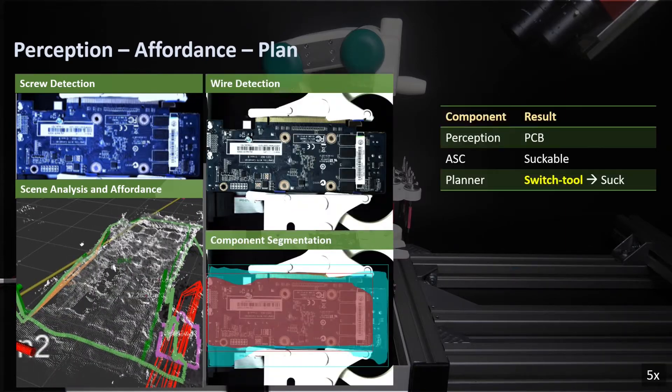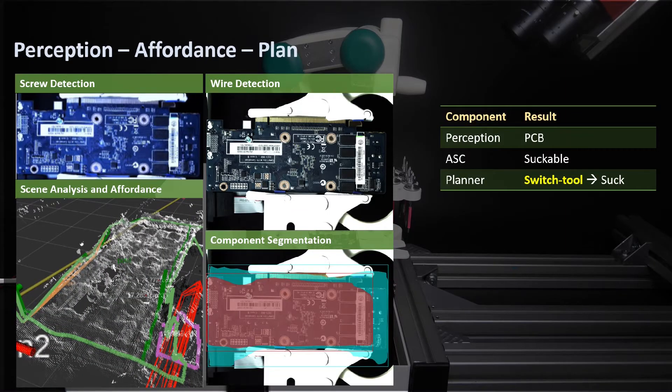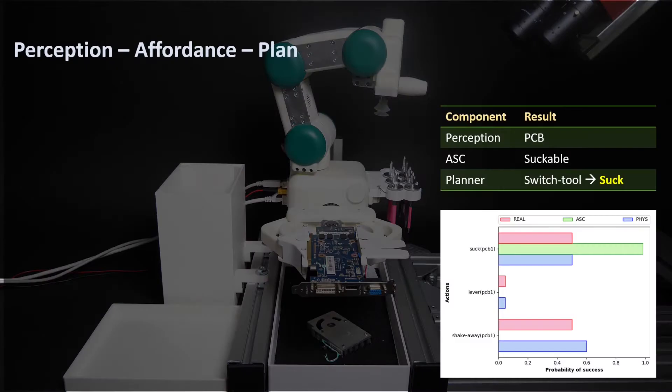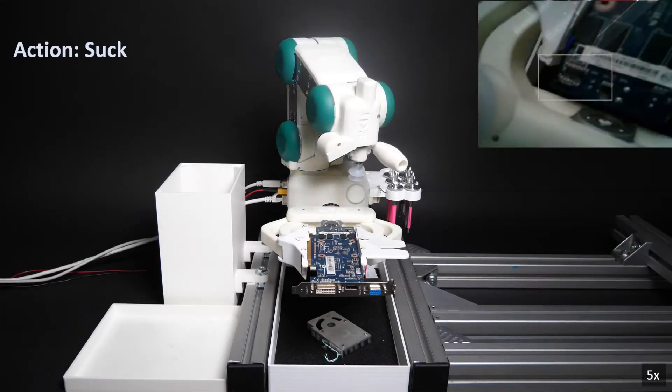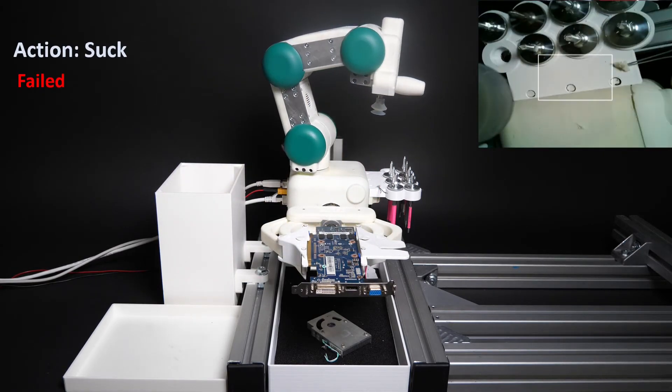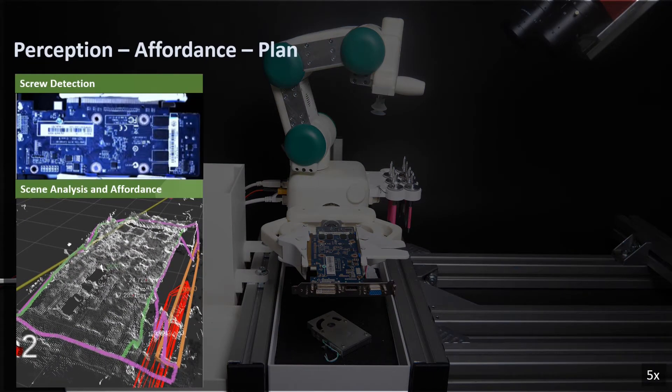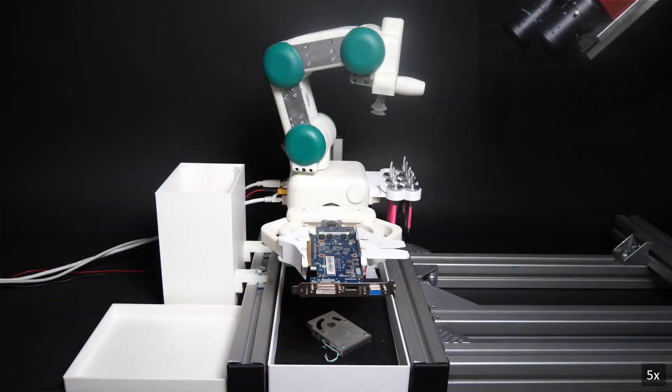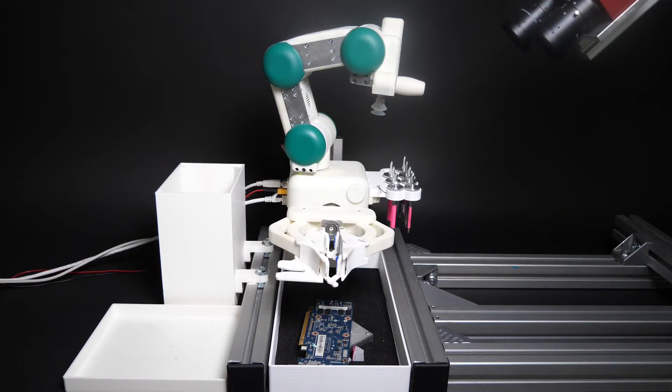The planner attempts to remove the PCB because PCB is a part that is typically removed in other devices. However, in the current scene, the PCB is actually the backbone that cannot be removed by the planned suck action. More work is needed for recognizing which is the backbone part of a device. Since the suck action takes no effect and no further disassembly actions are viable, the system resets the robot for the next disassembly task.